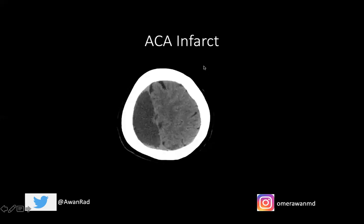An anterior cerebral artery infarct classically presents with contralateral weakness and sensory loss, particularly in the lower extremity. So a right ACA infarct would present with left lower extremity — leg, knee, calf, foot — weakness and sensory loss. The patient may also have urinary incontinence and behavioral disturbances. On CT, along the medial aspect of the brain surface near the forehead, you can see hypoattenuation or dark density, gyral swelling, and effacement of the sulci. You no longer see those dark CSF linear structures. This is a nice example of what an ACA infarct looks like.